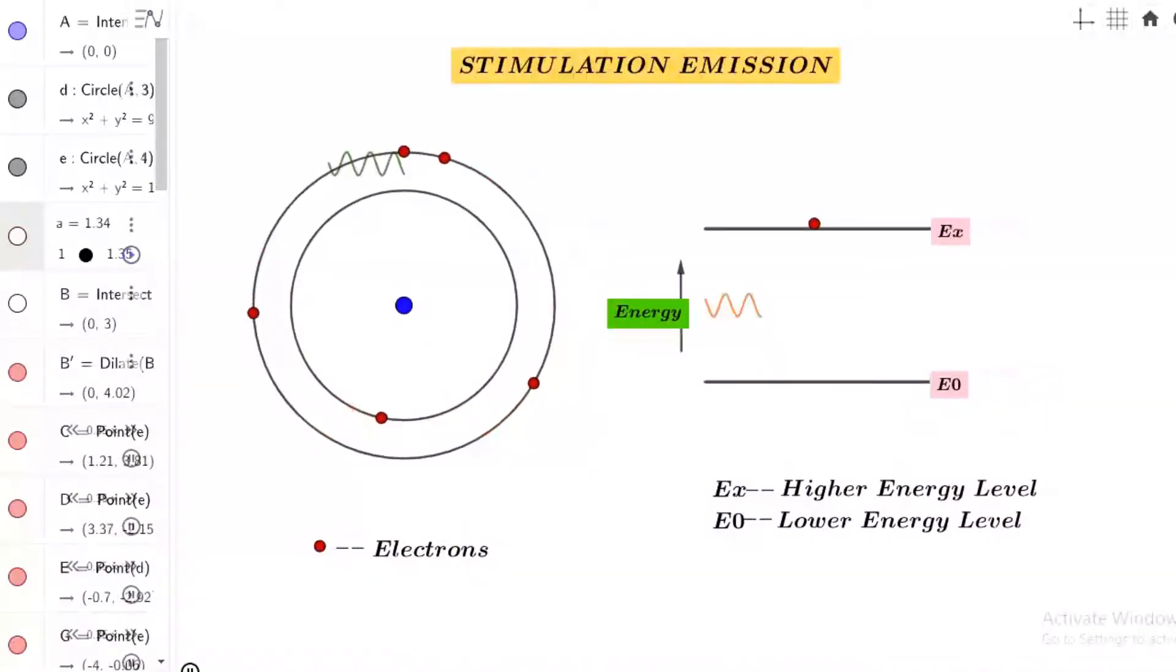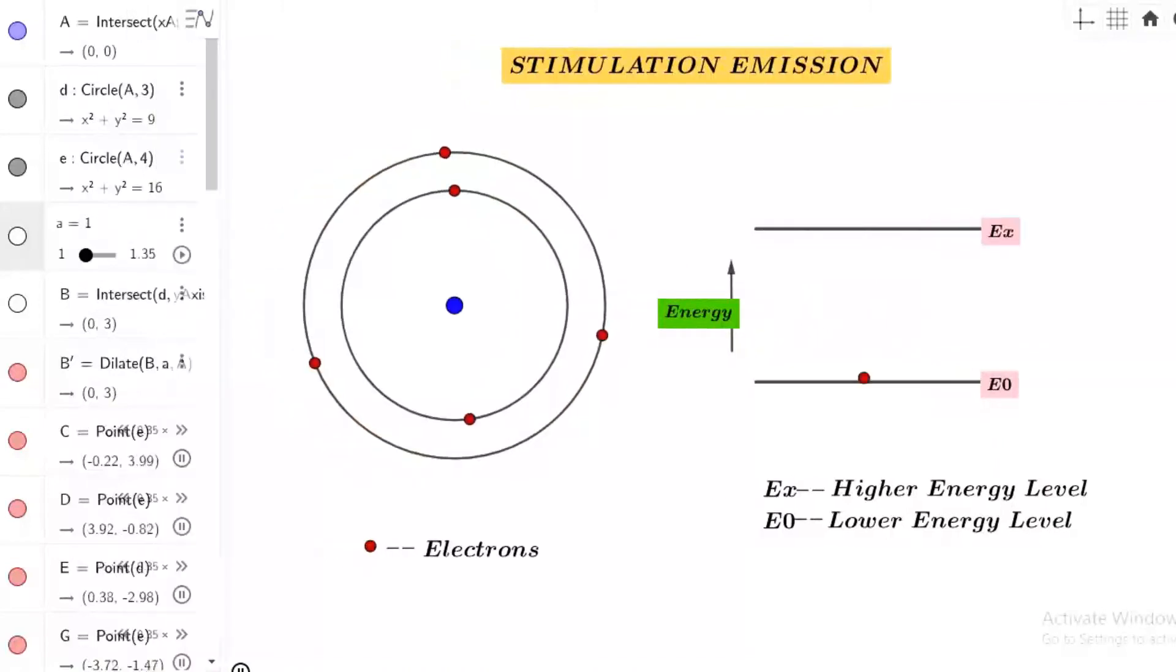Now let's see stimulated emission. In this process, atom is initially present in its excited state. The photons stimulate the atom to move to its ground state. In this process, the atom emits an additional photon with the same energy. This process is called stimulated emission.